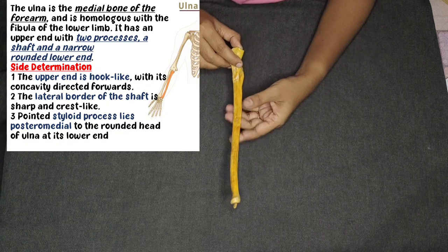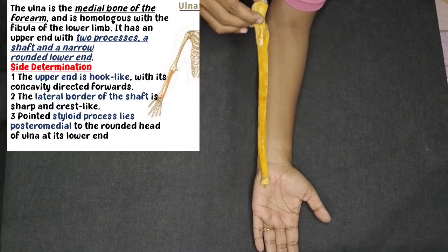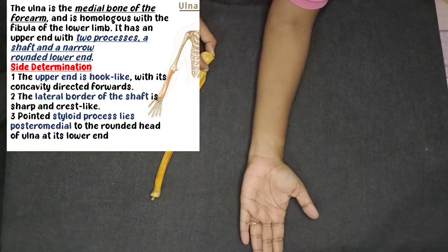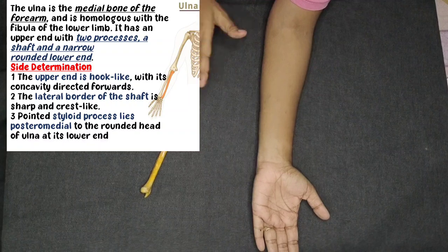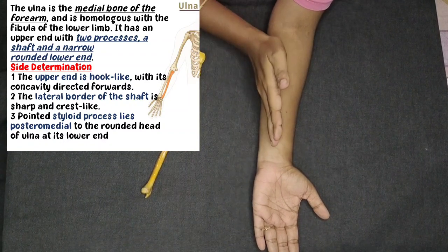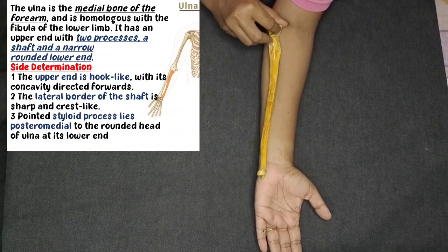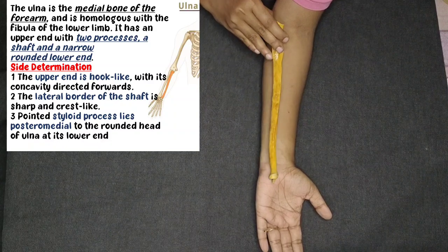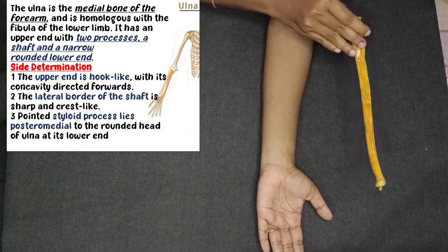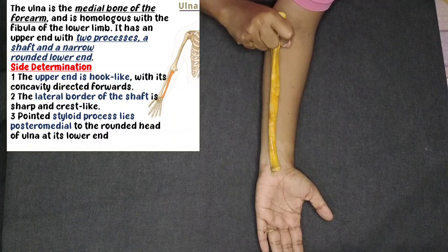In the introduction of Ulna bone, the first point is it is the medial bone. In anatomical position, with the hand in anatomical position, the medial side is towards the midline. So on that side of the bone, Ulna is the medial bone. Radius is the lateral bone.